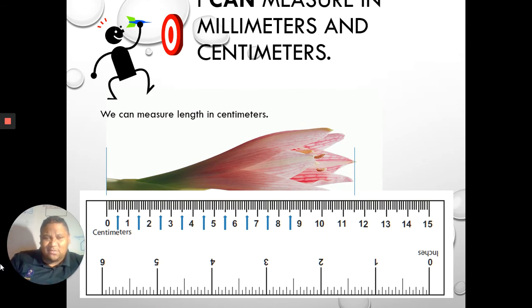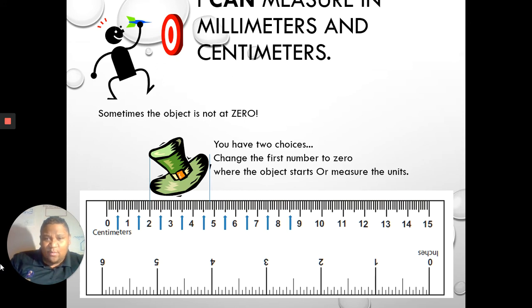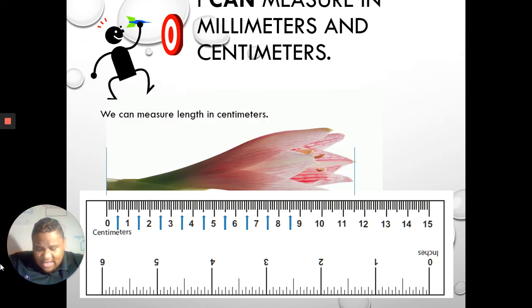So what happens when it's between something? Well, you have two choices. You can say it is about 11 centimeters. You have to say about. It is about 11 centimeters long, or you could say it is about 12 centimeters long because it is in between the 11 and the 12.